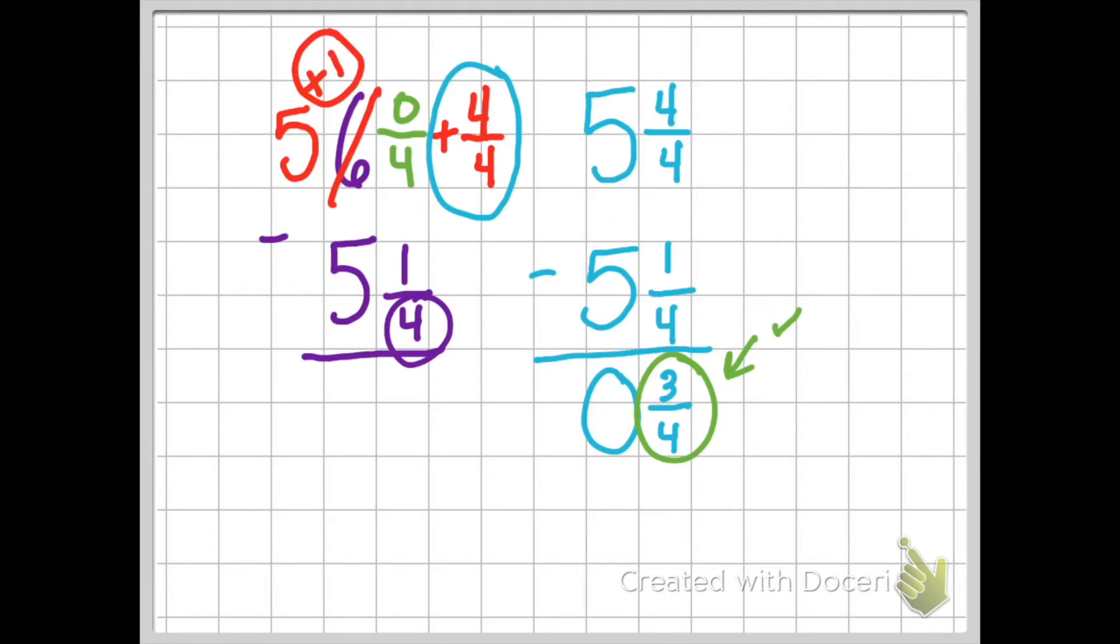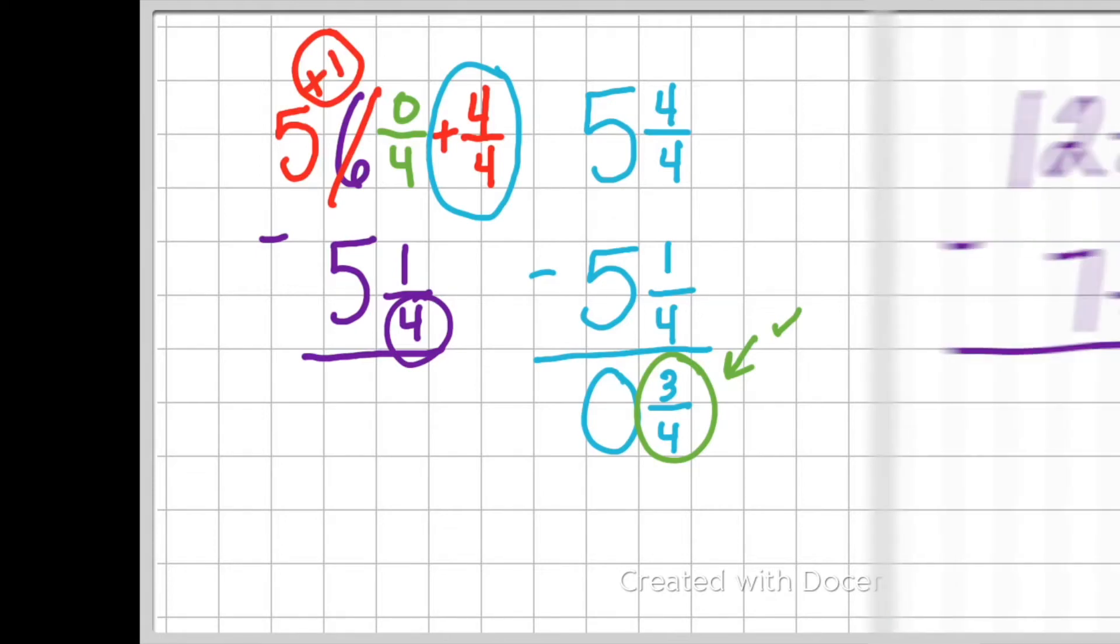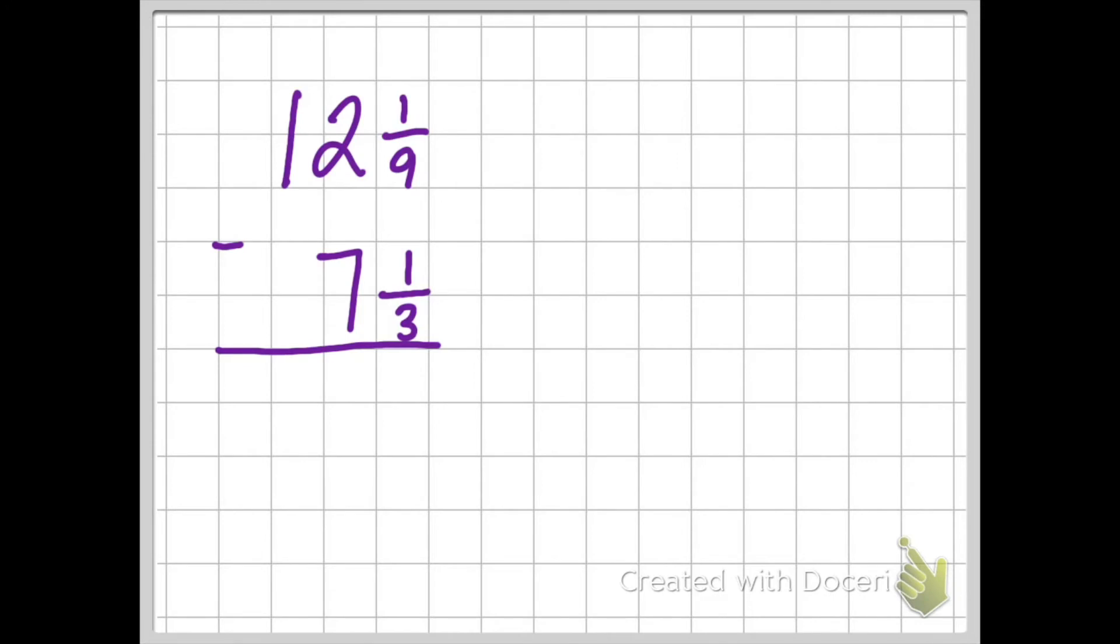Now, this is one way we have to regroup our fractions. 12 and 1/9 has a denominator of a 9, and 7 and 1/3 has a denominator of a 3. So I'm going to continue with the steps that I've already been practicing. I'm going to rename my denominators so that they're like or common denominators. I know that right away, 3 can go into 9, so 9 will become my new denominator.